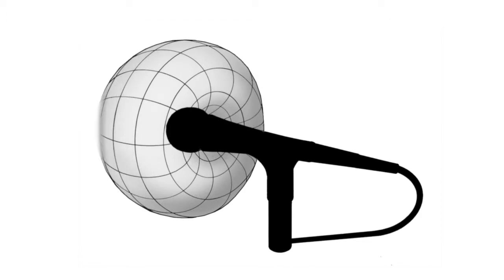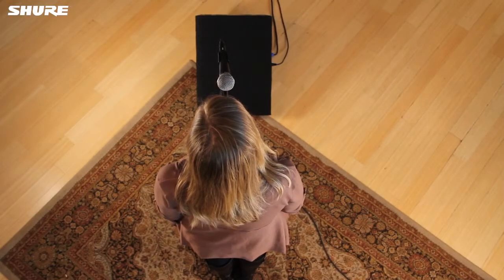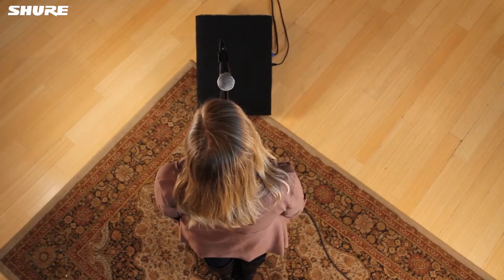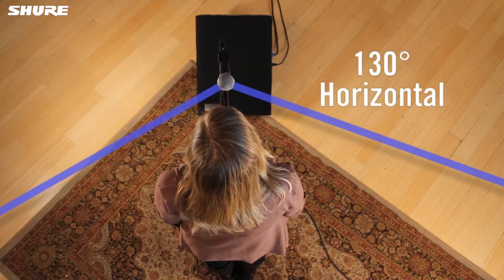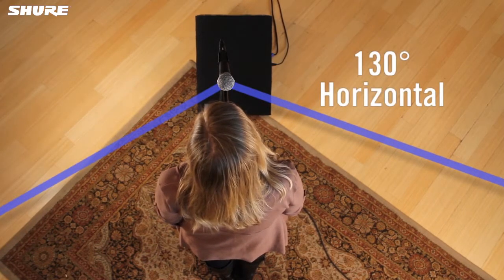A cardioid microphone is most sensitive to sound sources in front of the mic and least sensitive to sound sources that are directly behind the mic. A cardioid mic has a useful pick up angle of approximately 130 degrees, which can accommodate two talkers or singers or one user who may not always be directly in front of the mic.